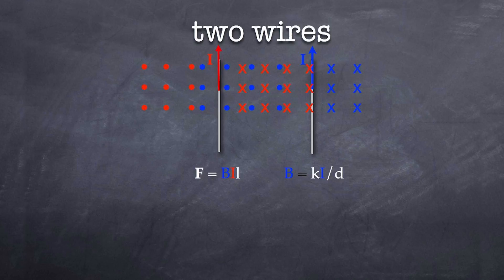In this case, our k is equal to 2 by 10 to the power of negative 7. And as you can see, if I were to substitute one into the other, what I end up getting is F is equal to kI1I2L over d. In other words, the force that is experienced between the two wires is equal to the product of the two currents multiplied by the length of the wires in that magnetic field divided by the distance between them.